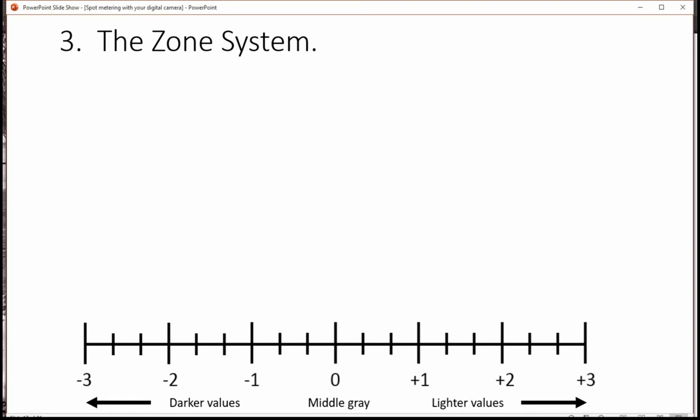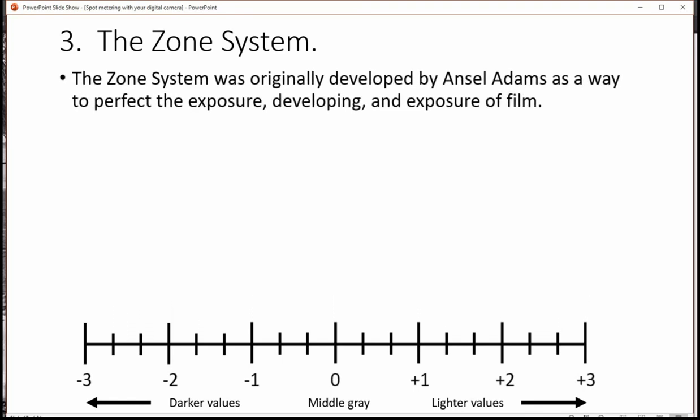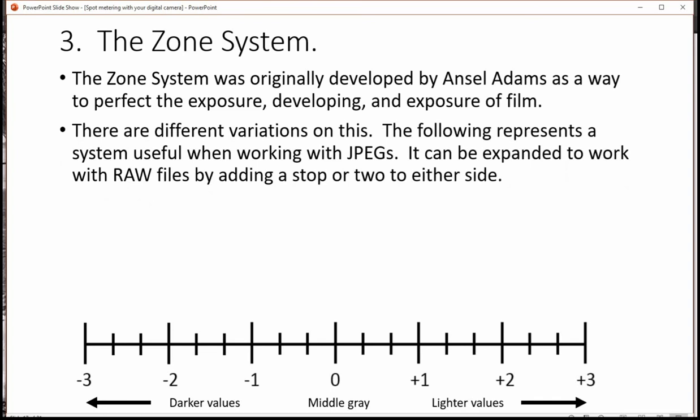Now a third way involves something called the zone system. The zone system was originally developed by Ansel Adams as a way to perfect the exposure, developing, and printing of film. There are different variations on this. This is my own twist on it over stuff that I've learned over the years. This system represents a useful method for working with JPEGs. You can expand this to work with RAW files by adding generally a stop to either side.